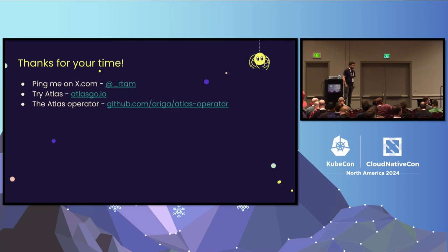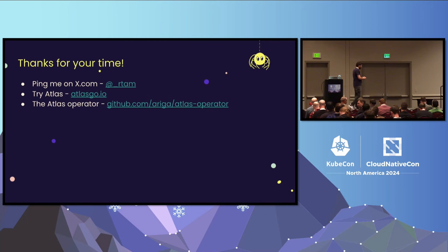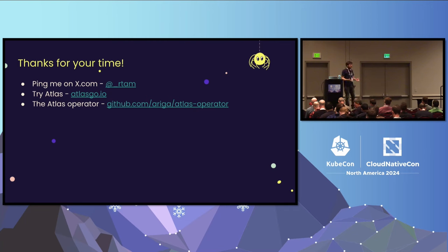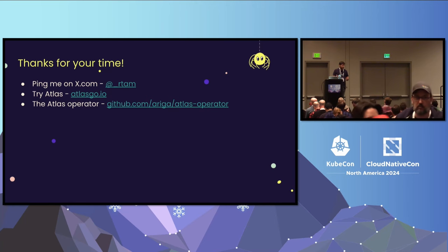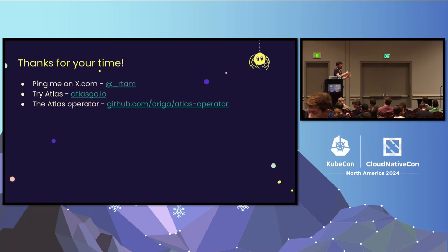Q: You mentioned data loss as one of the issues with down migrations — does Atlas directly address that? A: With Atlas you can configure how to deal with destructive operations. One approach is pre-migration checks: before Atlas drops a table, it asserts the table is empty, so it's not really a destructive operation. The other is a diff policy that in certain situations omits the drop operation — you keep the column around so when you return back up, it's still there.